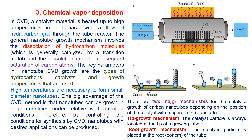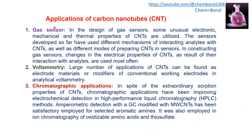There are two major mechanisms for the catalytic growth of carbon nanotubes depending on the position of the catalyst with respect to the substrate. The first is the tip growth mechanism, where catalyst particles are always located at the tip of the growing tubes. The second is the root growth mechanism, where the catalyst particle is placed at the bottom or root of the growing tube.